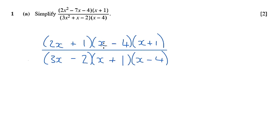From there we can see that lots of things are going to cancel. The 4 minus x's cancel, sorry the x minus 4's cancel, and the x plus 1's cancel to leave us with a final answer of 2x plus 1 divided by 3x minus 2.